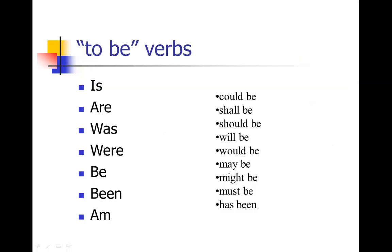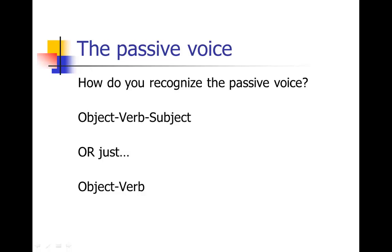The to be verb forms are: is, are, was, were, be, been, and am. Sometimes the be or been is paired with something else, like could be, shall be, will be, or has been. So how do you recognize the passive voice? You're looking for a passive verb — a to be verb connected to another verb in the past tense — or you can look for the structure object, verb, subject. And sometimes you'll just see object, verb, which is easy to recognize as passive voice since there's no subject.